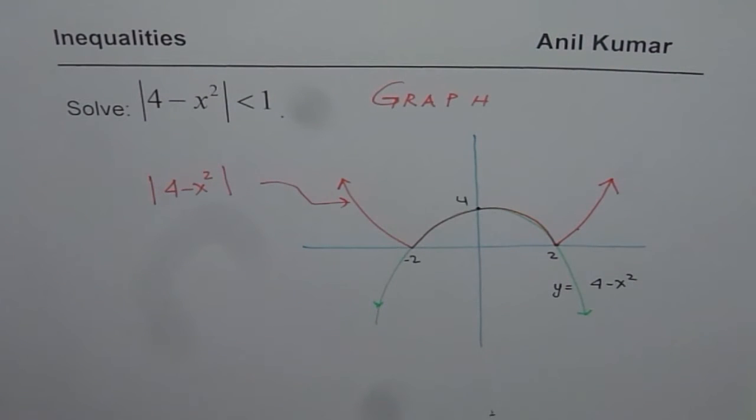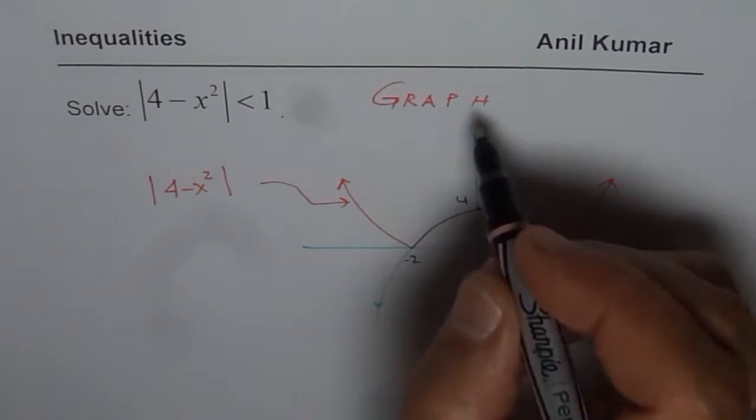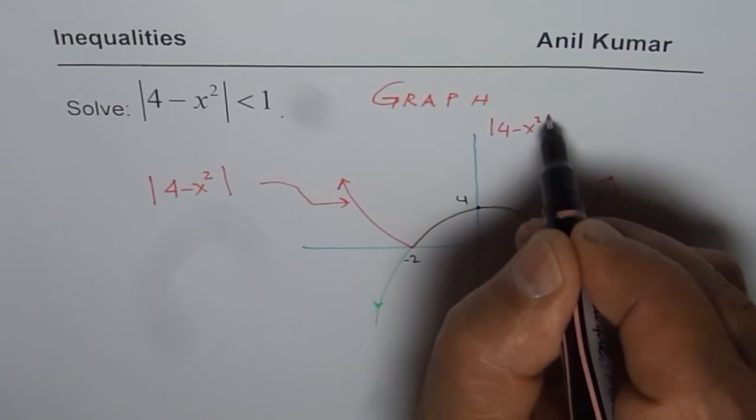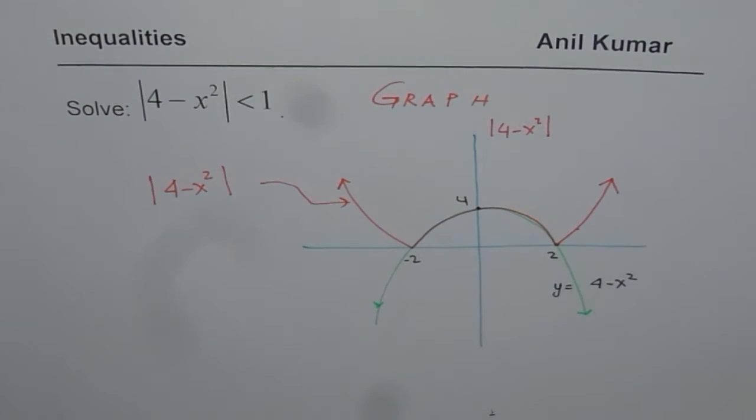Do you understand the concept? So now we have graph of 4 minus x squared absolute value. So everything is non-negative.